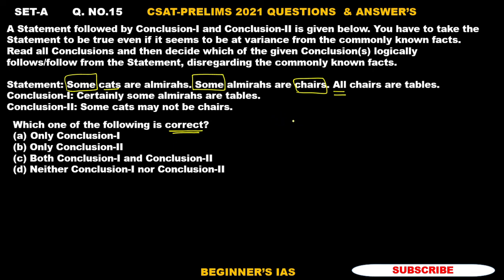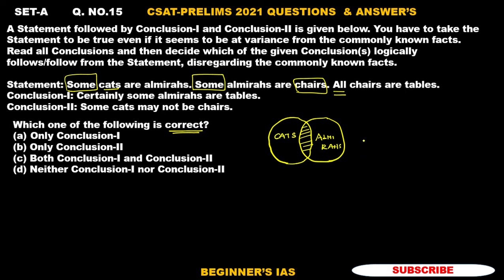After making a diagram with the statements, move on to the conclusions. We can make this diagram in a single way or multiple ways. I am taking this circle as cats. Some cats are almiras — so 'some' means partial overlap. This is the diagram: this portion is cats, this might be almiras — just this is the full almiras. Next, some almiras are chairs, so this portion here represents chairs.